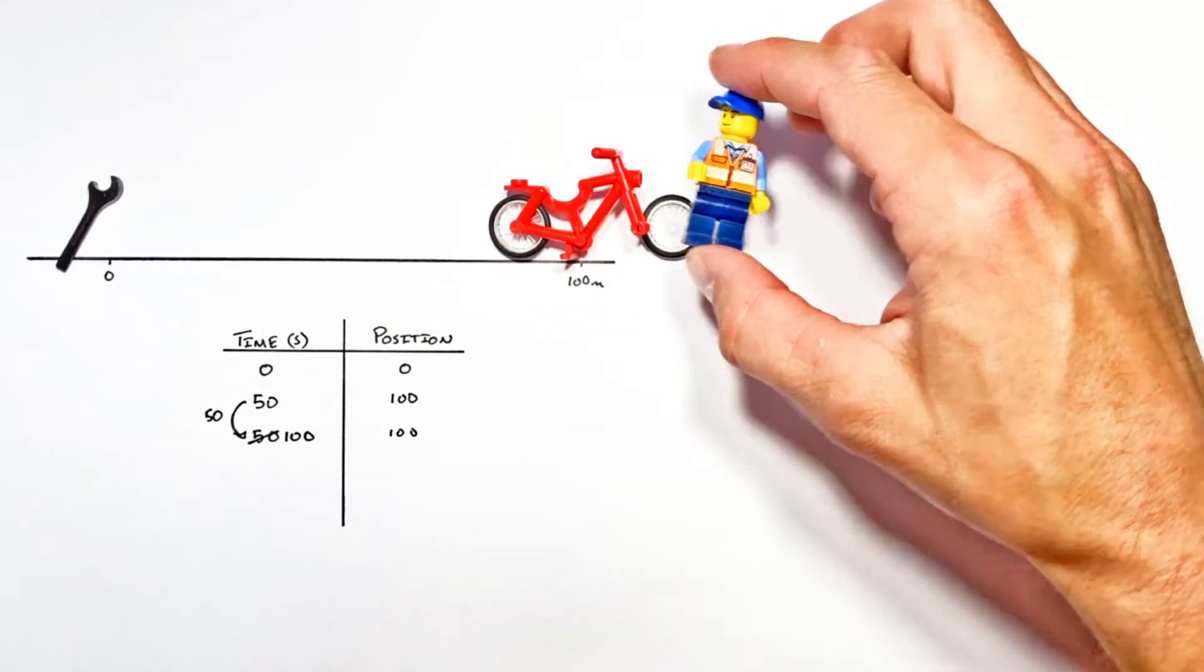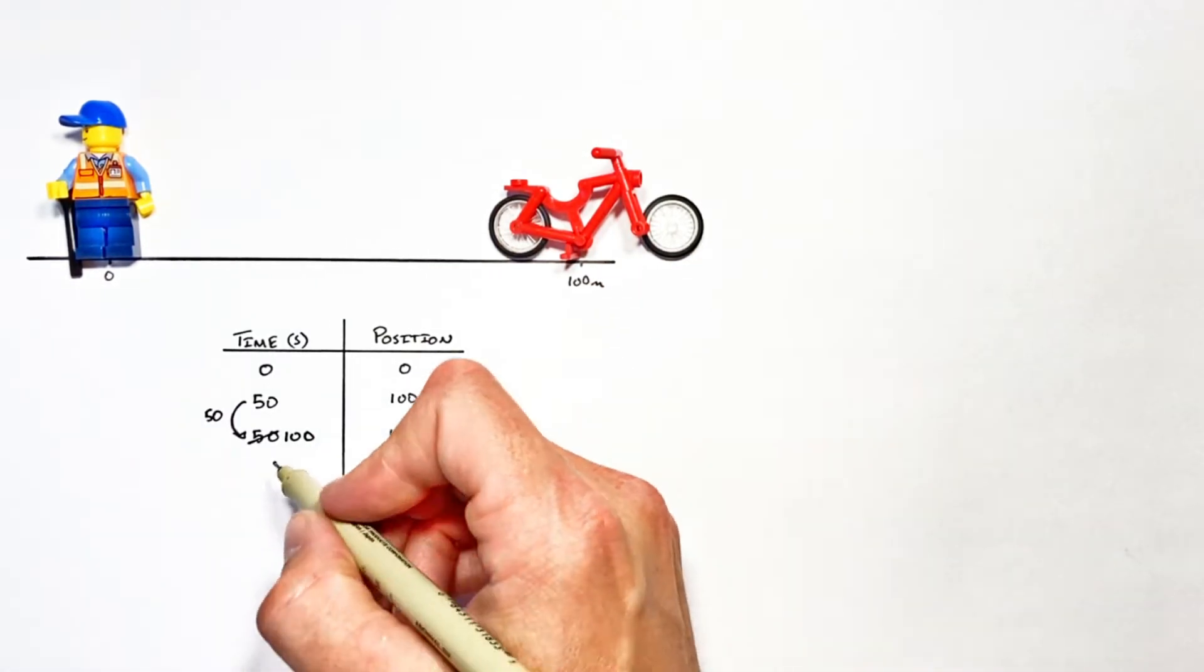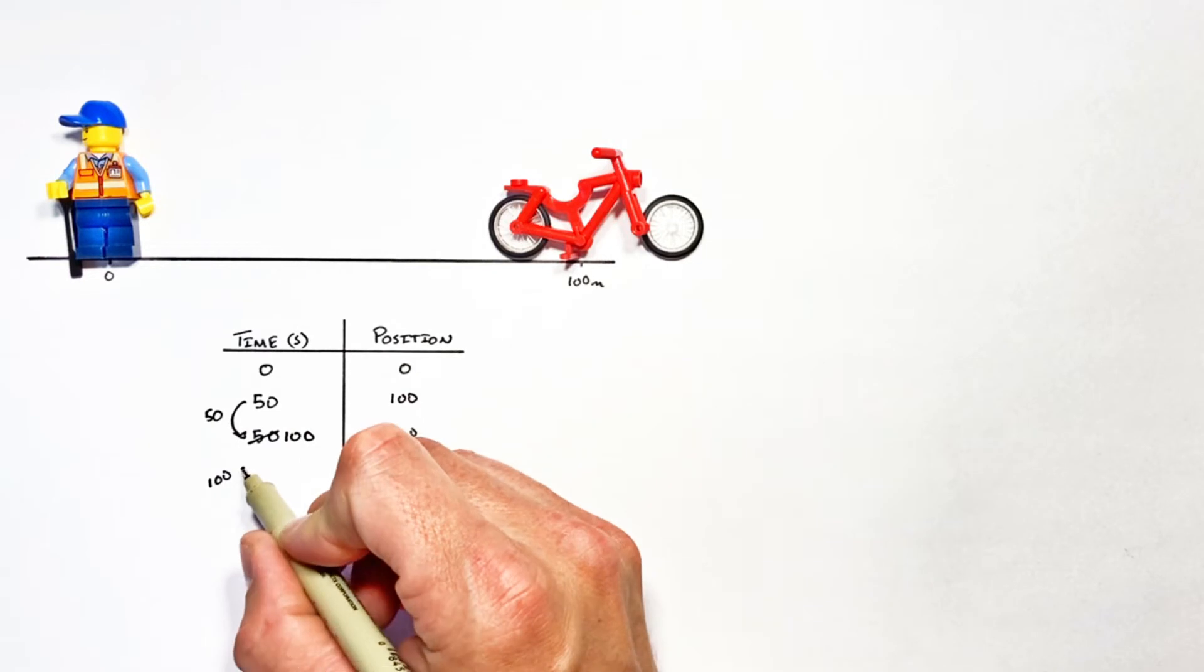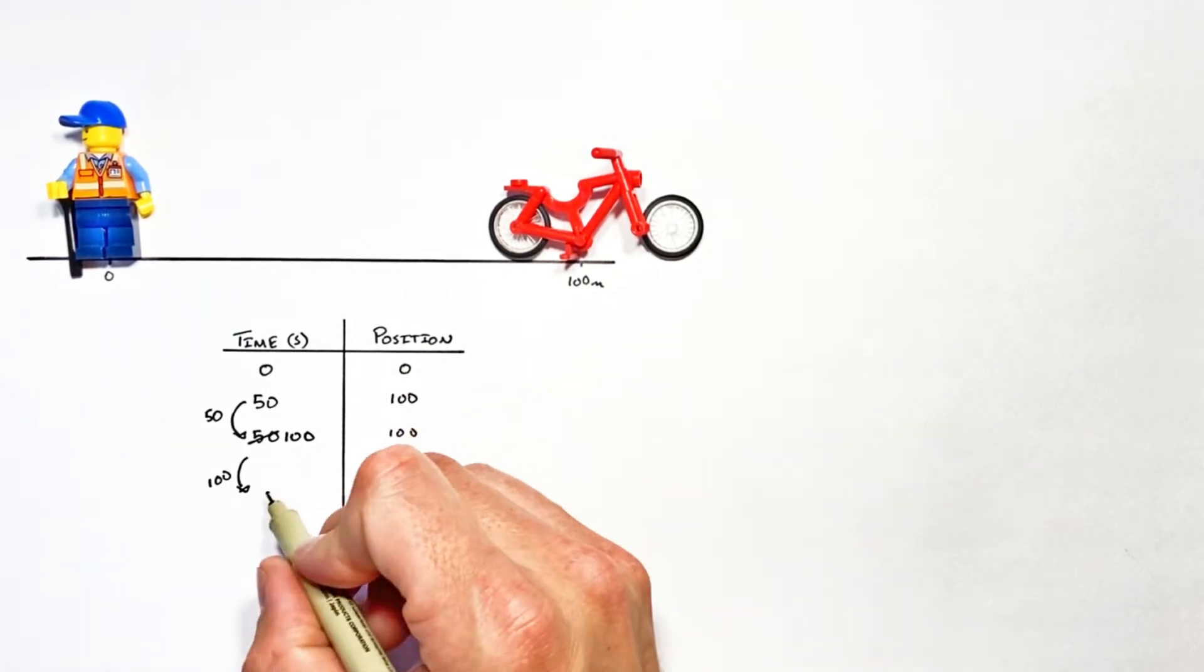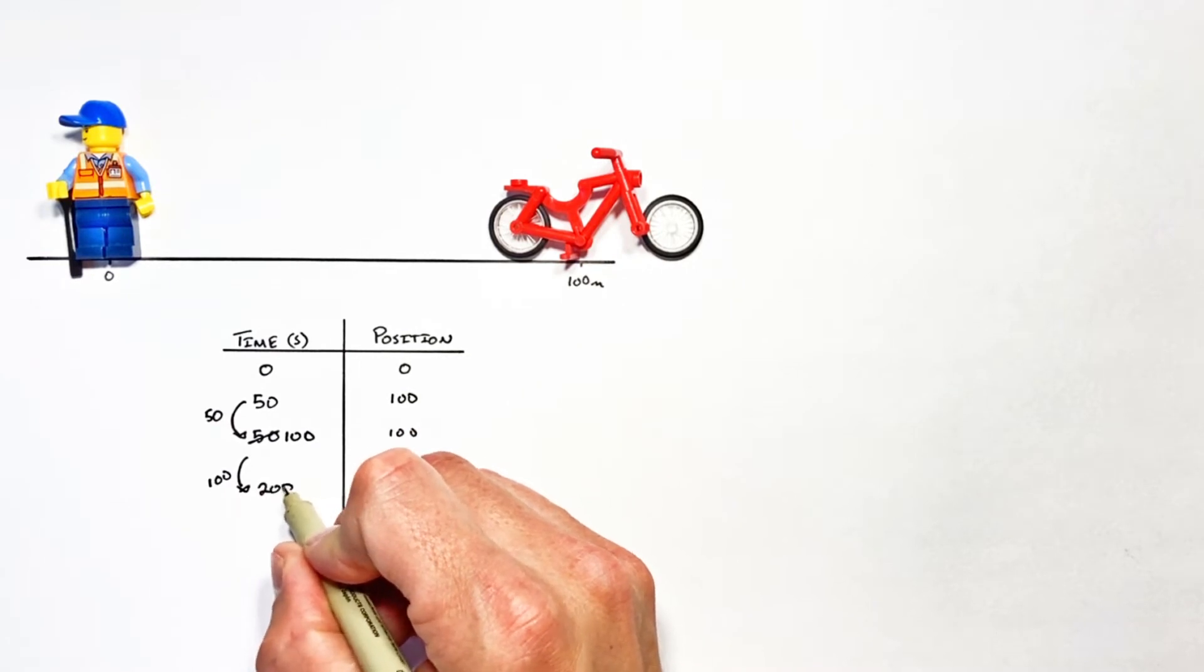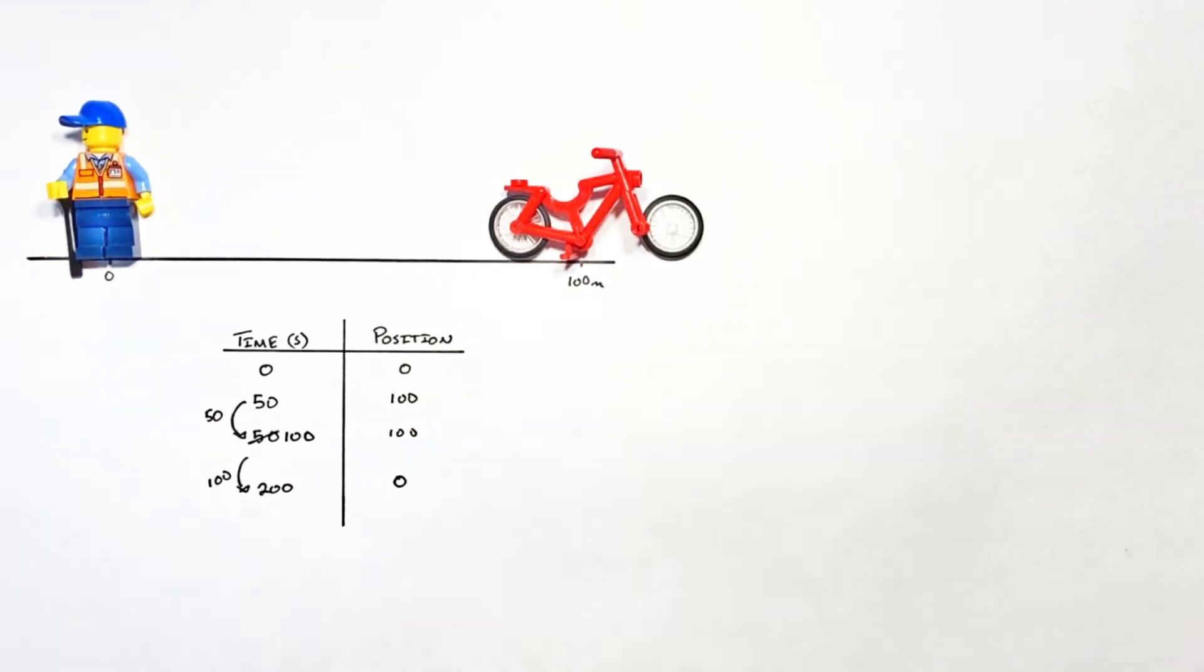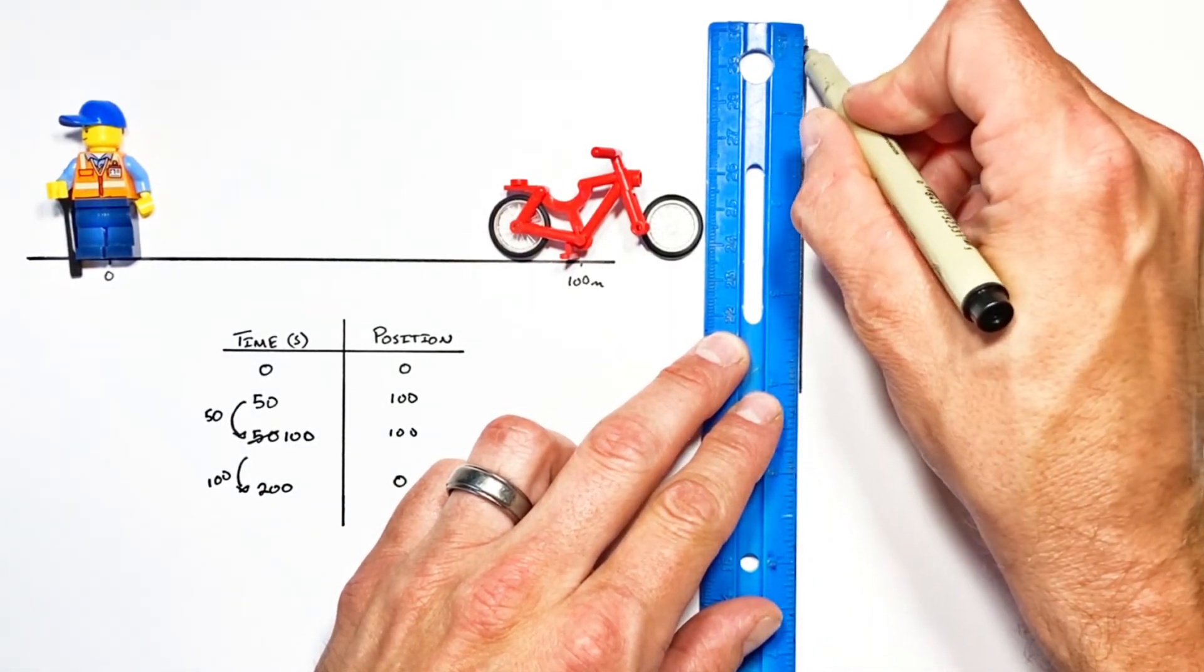He realizes he's got no tools and he's got to go all the way back, so he's got to walk his happy self all the way back and that's gonna take a while. Let's say it's gonna take another 100 seconds because he's walking, he's not riding his bike. Well 100 seconds after time of 100 is 200 seconds. That's gonna bring him all the way back to a position of zero. This is enough data here so let's take this epic journey that has occurred and graphically show what's going on.